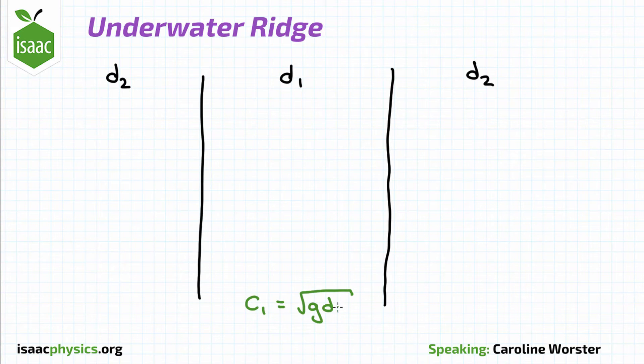From the question, we know that this gives a speed of root gd1 in the middle and root gd2 at the edges.